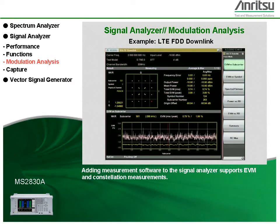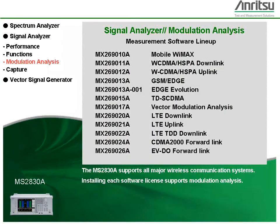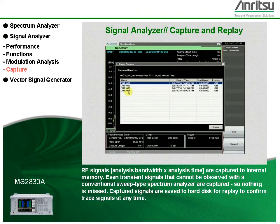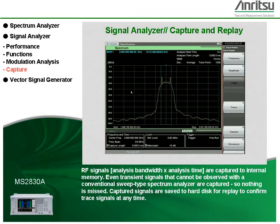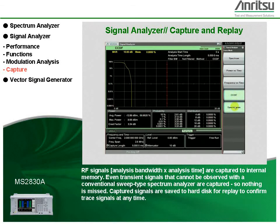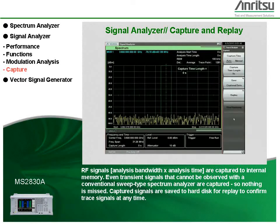Adding measurement software to the signal analyzer supports EVM and constellation measurements. The MS2830A supports all major wireless communication systems, and installing each software license supports modulation analysis. RF signals are captured to internal memory, so even transient signals that cannot be observed with a conventional sweep-type spectrum analyzer are captured and nothing is missed. Captured signals are saved to hard disk for replay to confirm trace signals at any time.